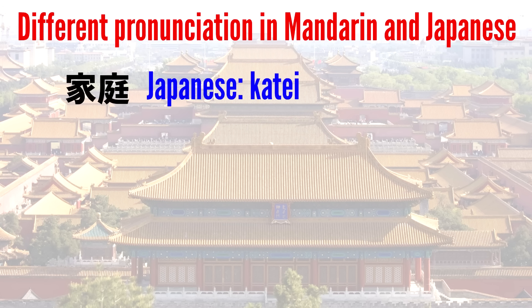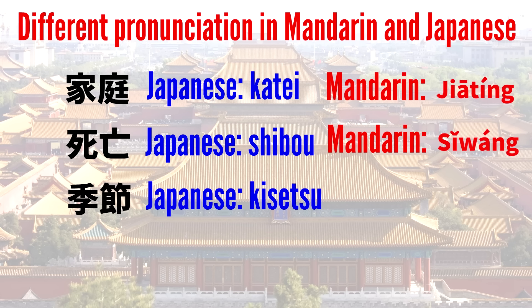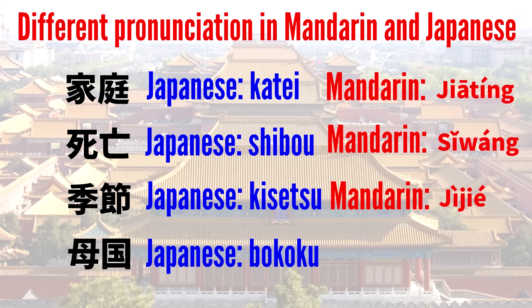The word for family, in Japanese it's 家庭, and actually in Japanese the meaning is more like household or home, and in Mandarin 家庭。Next, the word for death: in Japanese 死亡, and in Mandarin 死亡。Next, the word for season: in Japanese 季節, and in Mandarin 季節。And the word for home country: in Japanese 季国, and in Mandarin 季国。So you can see that these words look the same and they have basically the same meaning, but they sound very different.